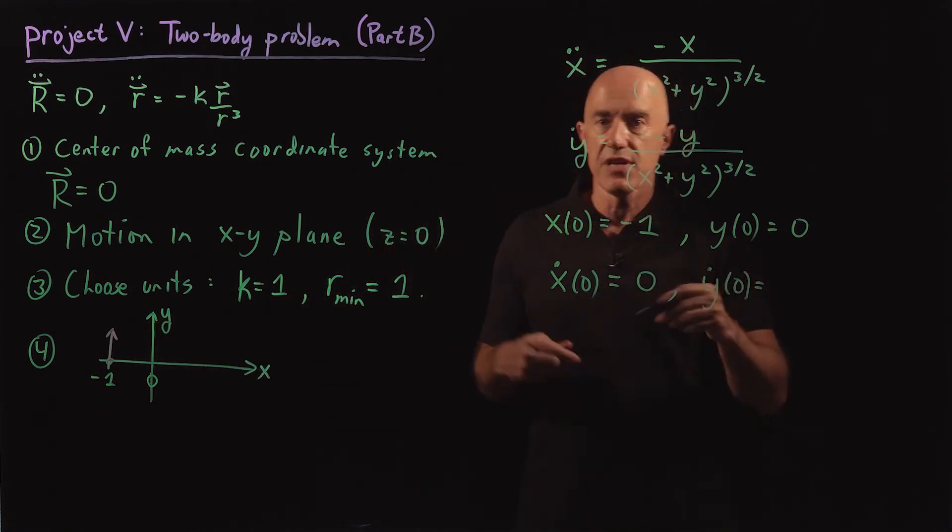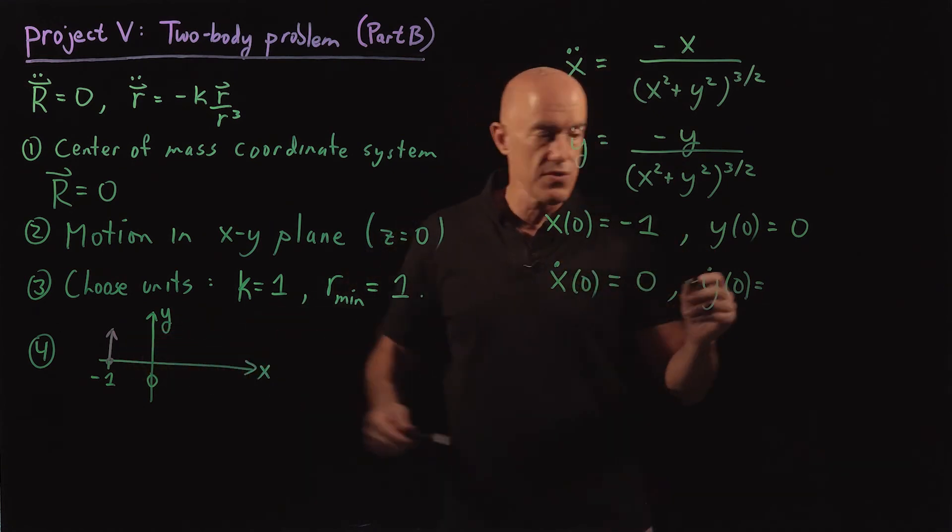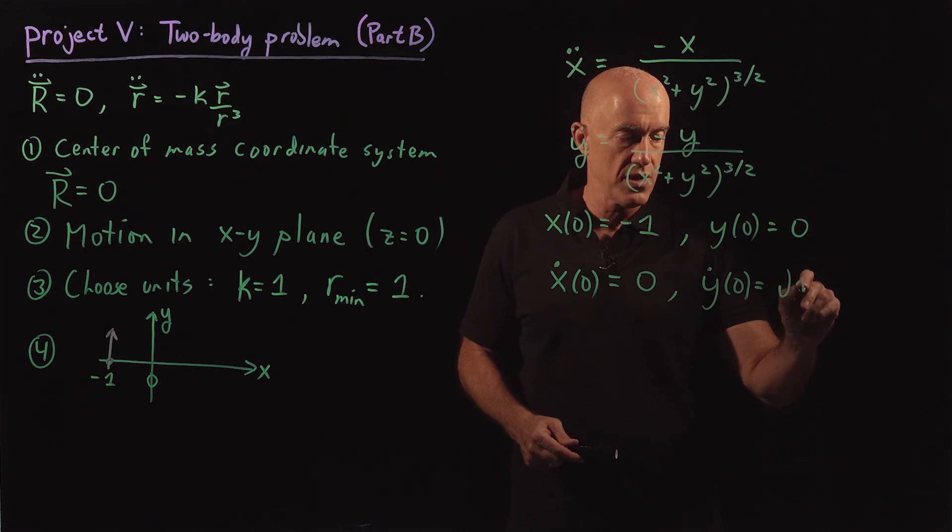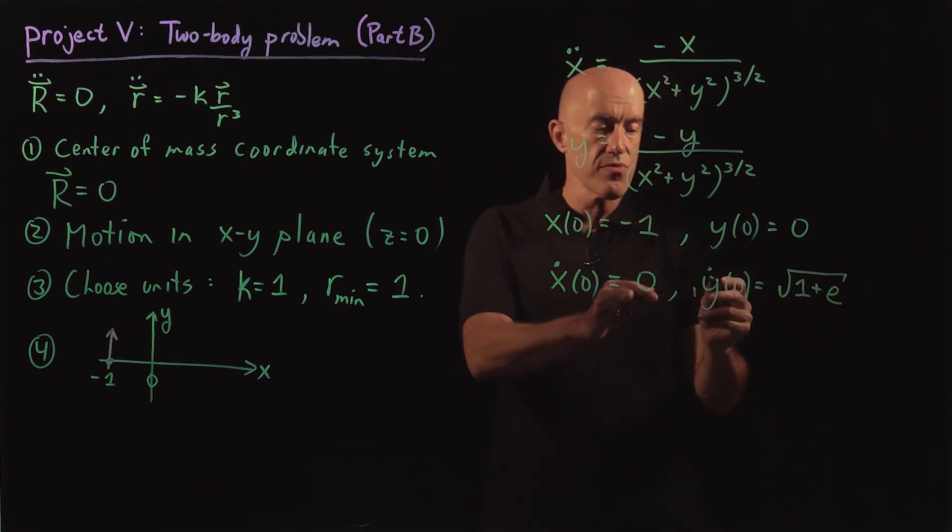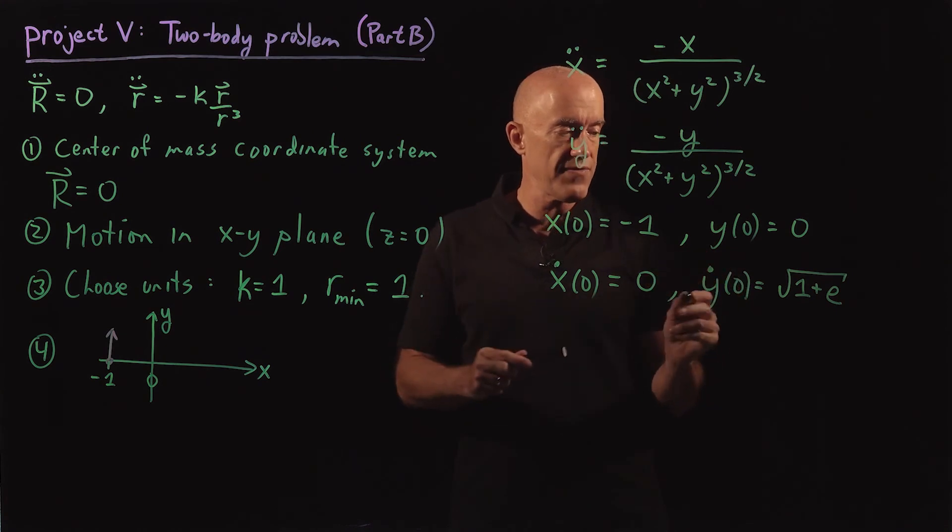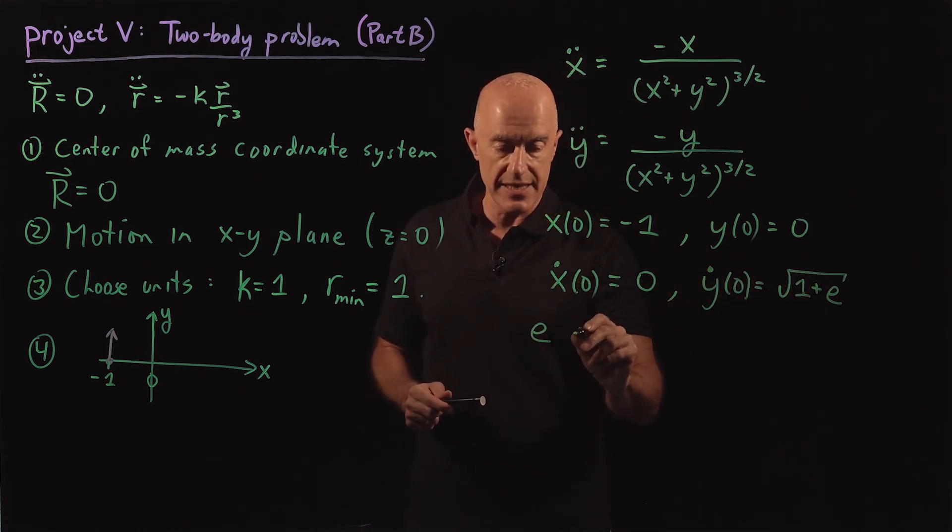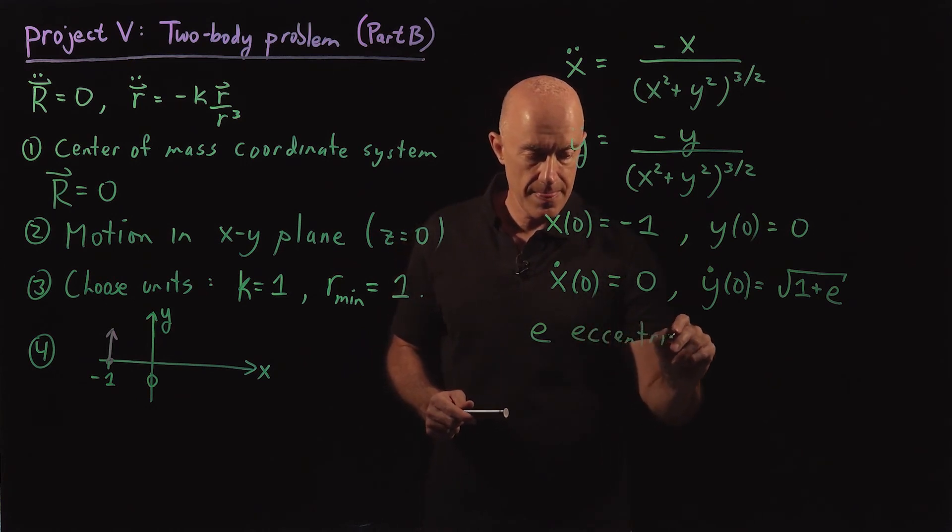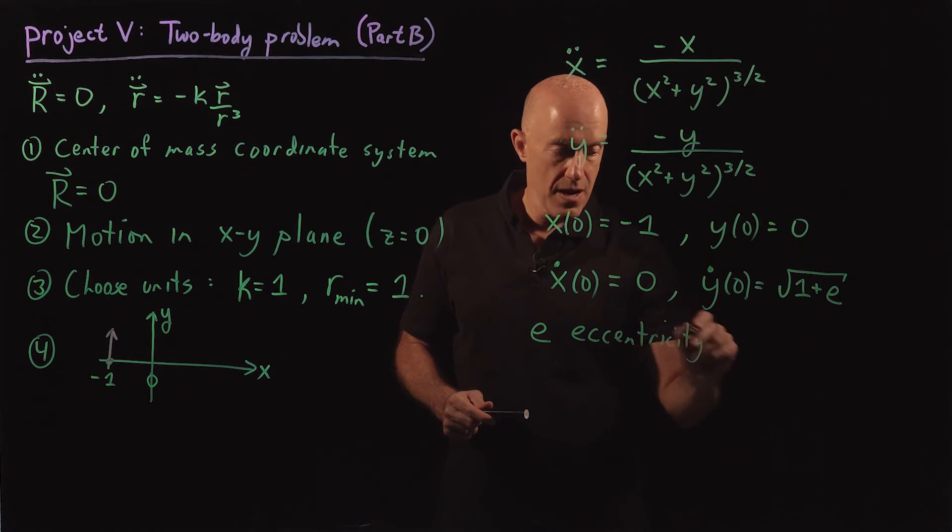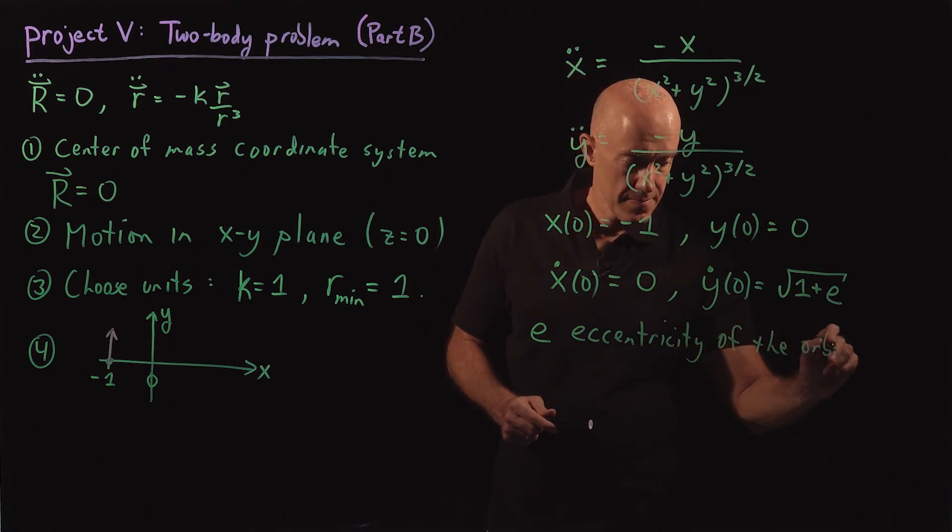If you do some further analysis, which I won't do here, you can show that that's equal to the square root of one plus e. So we write the initial y velocity in terms of e, where e is the eccentricity of the orbit.